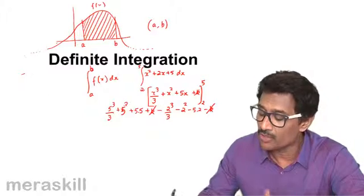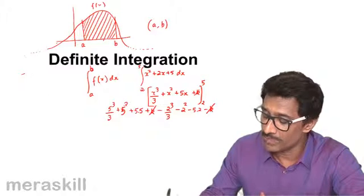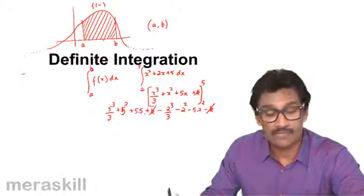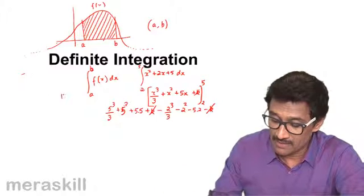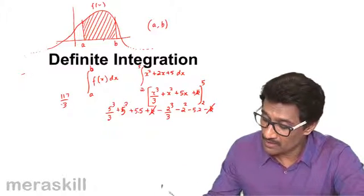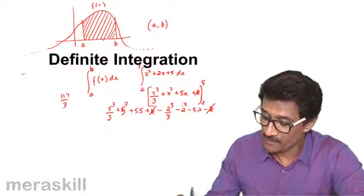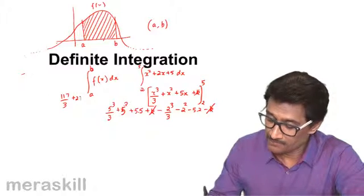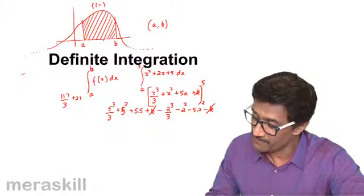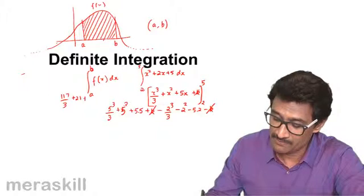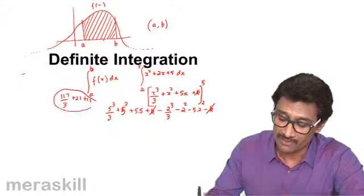So this is the value that you are going to get: 5 cubed by 3 minus 2 cubed by 3, that is 125 minus 8, 117 by 3. 5 square minus 2 square, that is 21. And then 25 minus 10 plus 15. So this will be the value of this particular integral.